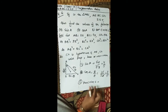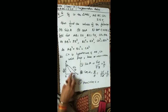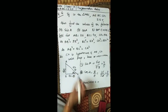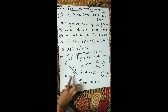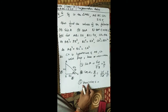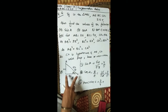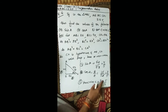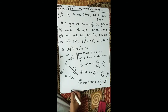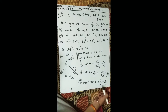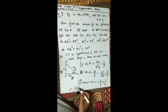For tan C plus sec C: with theta at C, the perpendicular is AB (3x) and base is BC (4x). Tan C equals perpendicular upon base equals 3 by 4. Sec C equals hypotenuse upon base equals 5x upon 4x, so 5 by 4. Adding them: 3 over 4 plus 5 over 4 equals 8 over 4, which is 2. Note: the answer key may show a different answer, but this is the correct solution.